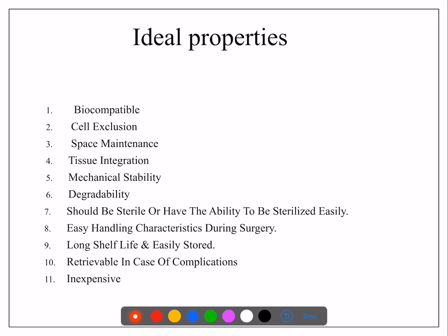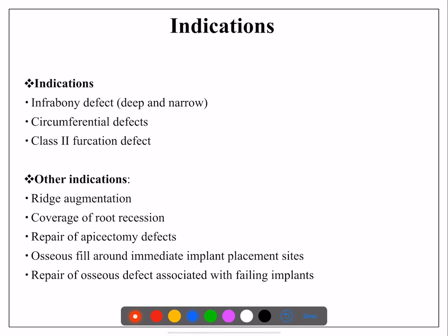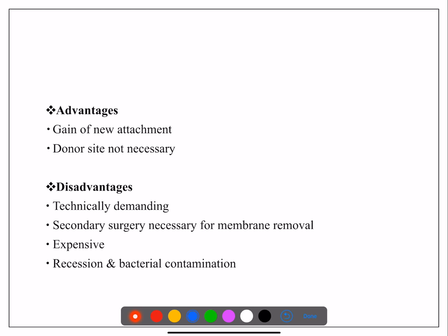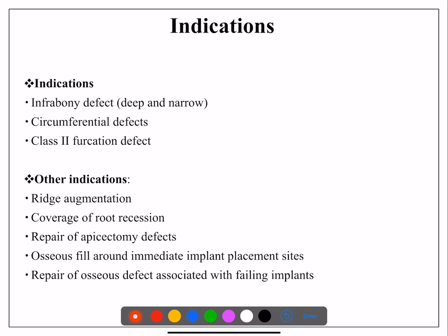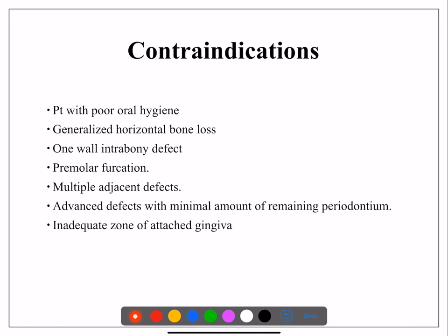Now the properties of GTR membranes — make note of all these. Indications for GTR: intrabony defects that are deep and narrow, Class 2 furcations, and circumferential defects are the major indications. Other indications include ridge augmentation, coverage of root recession, repair of dehiscences, osseous fill, and osseous defects. Contraindications include one-wall defects, generalized horizontal bone loss, premolar furcations, and inadequate zone of attached gingiva.